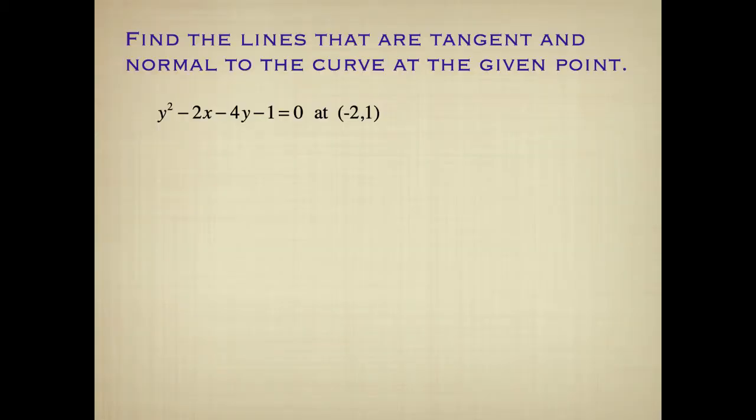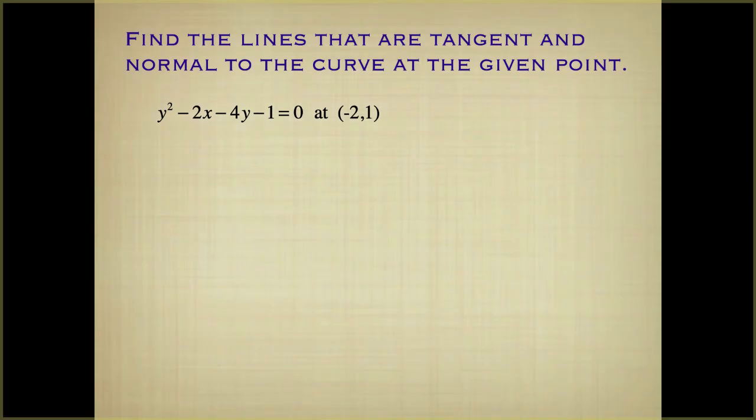So here it says find the lines that are tangent and normal to the curve at the given point. So we want tangents and normals. To find the equation of our line, we need to get a slope. We already have a point, so we need our slope. And to find the slope, we take the derivative.